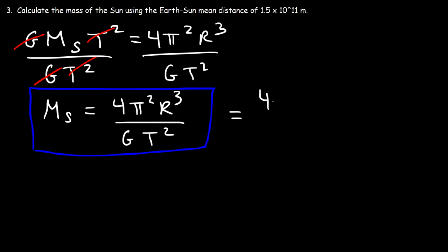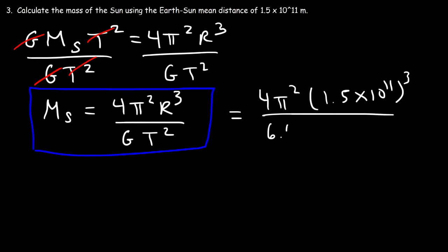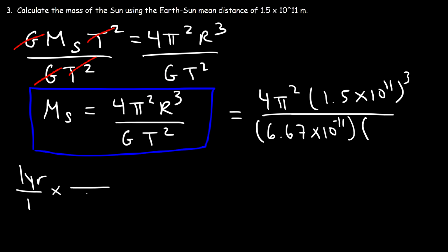Plugging in values: R = 1.5×10¹¹ m (Earth-Sun distance), G = 6.67×10⁻¹¹, and T is the period in seconds. It takes about one year — 365 days (or 365.25 including leap years) — for Earth to orbit the Sun, but the answer won't change much either way.